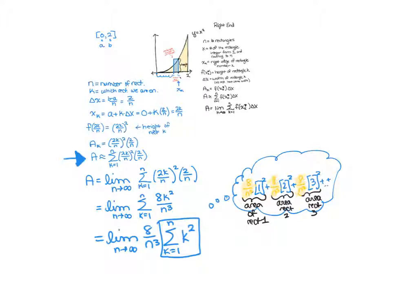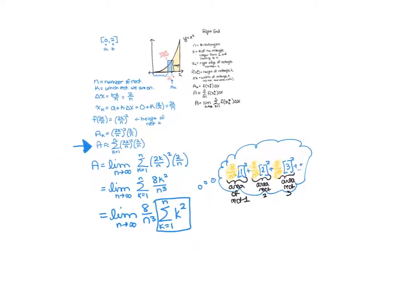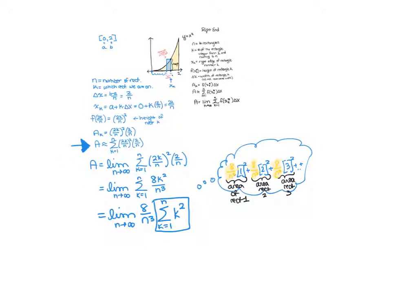Because we know theoretically that this limit would give us the area. But right now when we do these Riemann sums exactly, they always have to be a line or a quadratic or a cubic. They're really the only things we know how to take the exact limit of because it turns out that they always give us a bunch of these sums that we know how to find. So the limit as n goes to infinity, 8 over n cubed, and the sum of k squared is n times n plus 1 times 2n plus 1, all over 6.